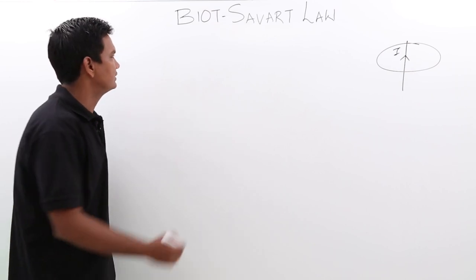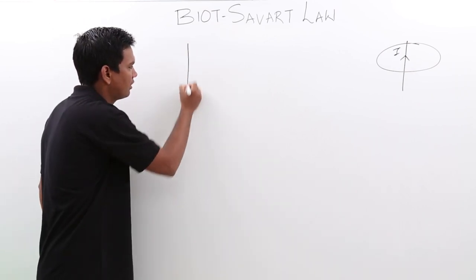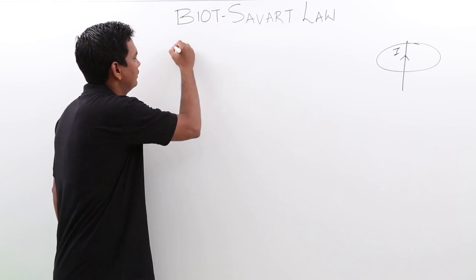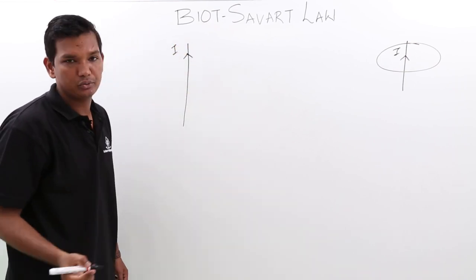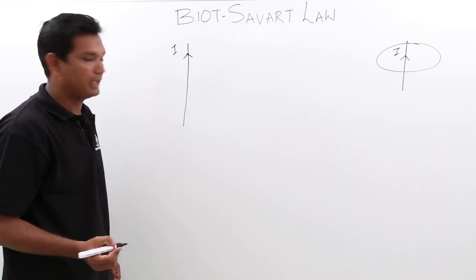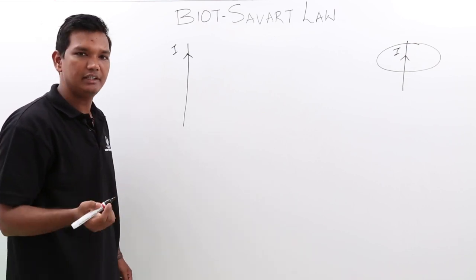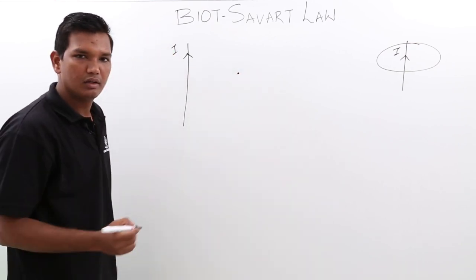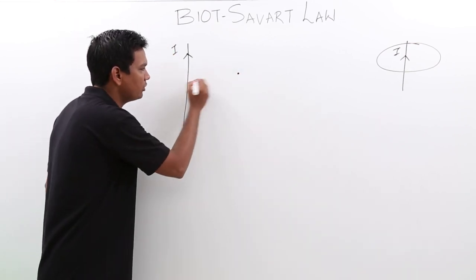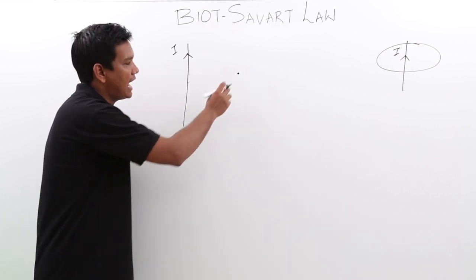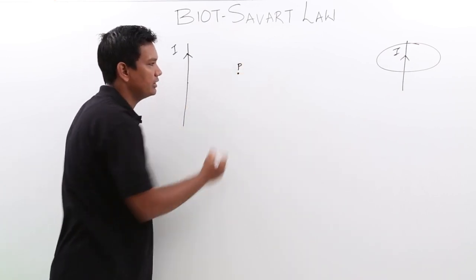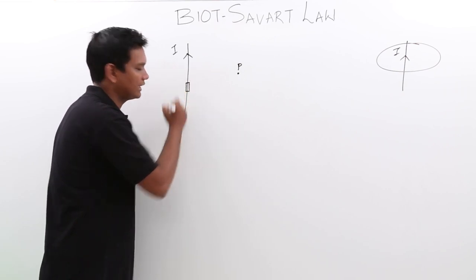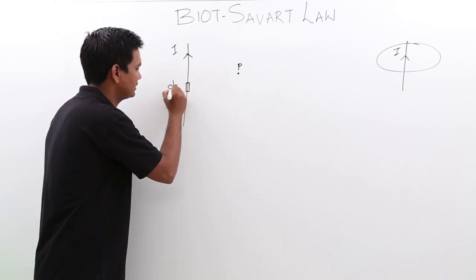What Biot-Savart said is: if we have a current-carrying conductor with current flowing through it as I, and we want to find the magnetic field intensity at any point in space — let me take this as point P — we consider the magnetic field intensity at point P due to a small length of the current-carrying element, which we call DL.